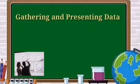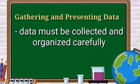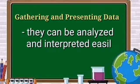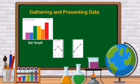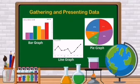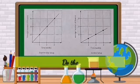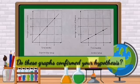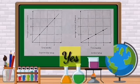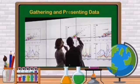Next is gathering and presenting data. In every type of scientific investigation, data must be collected and organized carefully. When data are organized, they can be analyzed and interpreted easily. This could be done through the use of a bar graph, line graph, or a pie graph. In the carnation experiment, you can graph time versus number of flowers for each setup. The graphs show that the carnations in the experimental setup yielded more flowers than those in the control setup when exposed to more sunlight, confirming the hypothesis.